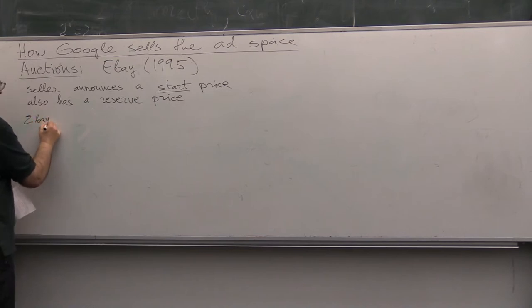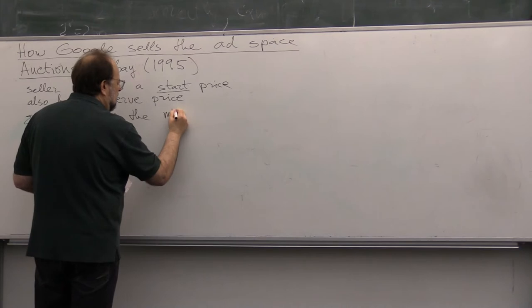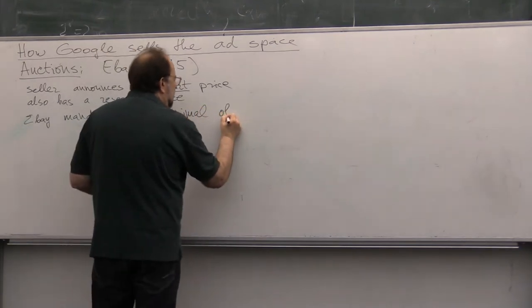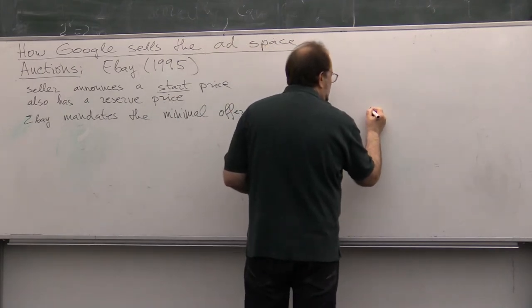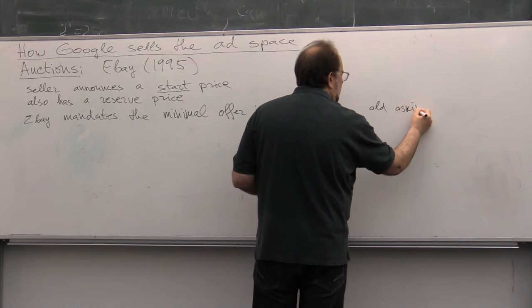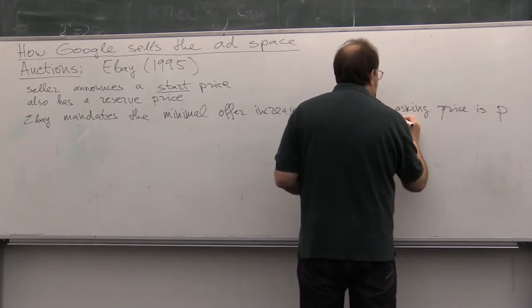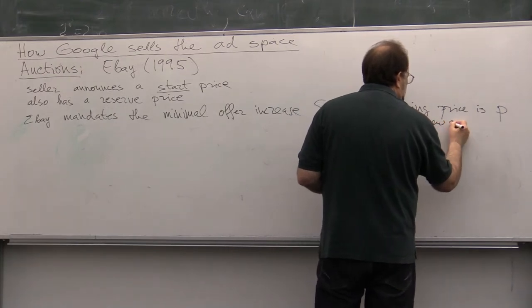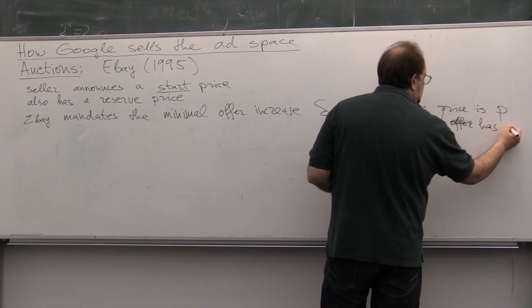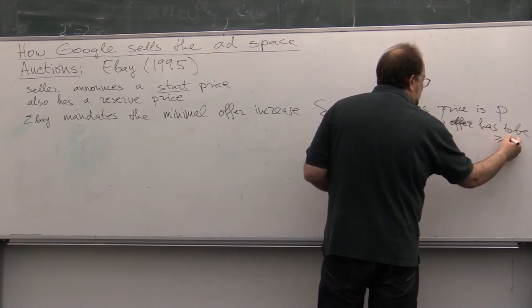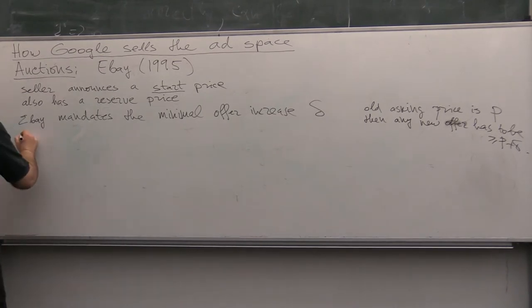eBay mandates the minimal offer increase. So, let's call this delta. So, if the old asking price is p, then any new offer, the customer has to bid bigger or equal than p plus delta, okay?